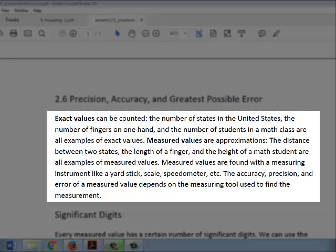The height of a math student would also be a measured value. The number of students in a math class would be an exact value because it can be counted, but the height, weight, and age of the math students would be measured values, which are approximations.